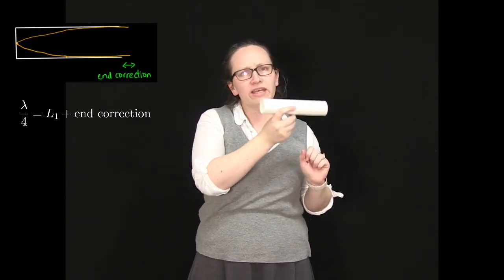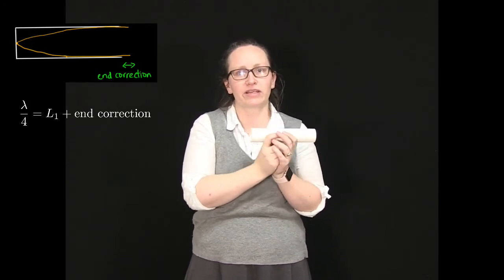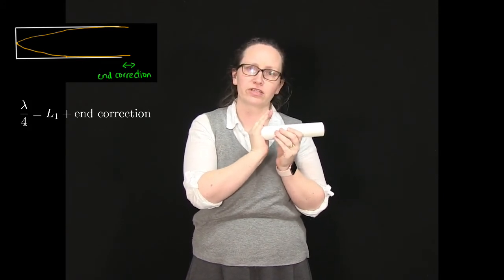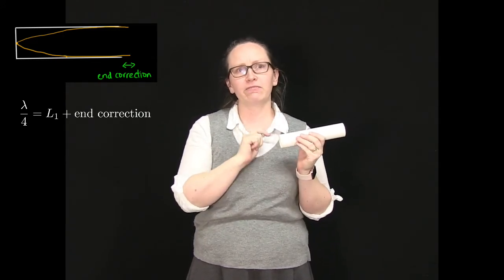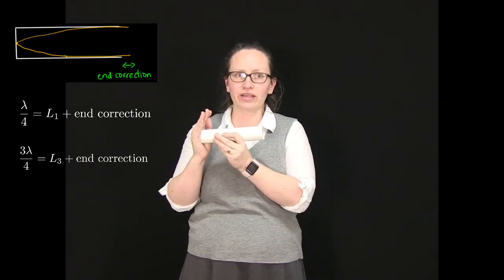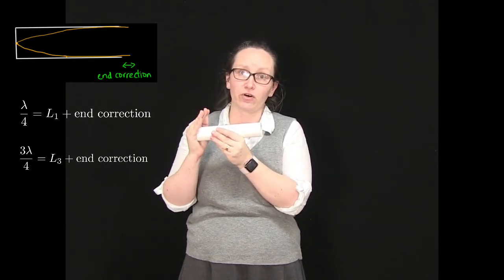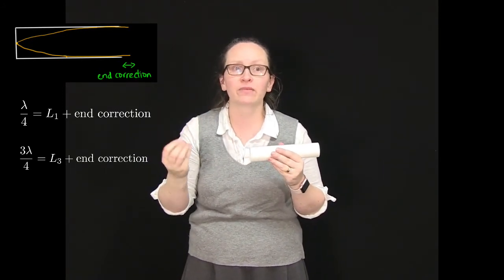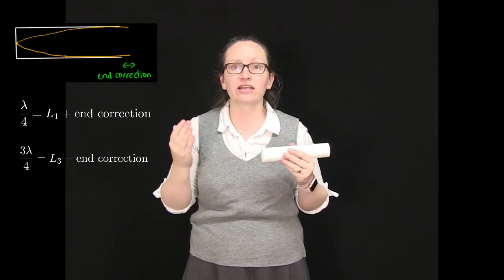So now we can account for end effects if we measure a couple of different harmonics. So let's say we had this closed pipe - if we just measured the first harmonic we wouldn't know how big the end effects were. But if we measure the first harmonic and the third harmonic, in that case for the third harmonic we've got L plus the end effects is equal to 3 lambda on 4, and we actually have two equations that we can now solve simultaneously in order to work out the size of the end effects.